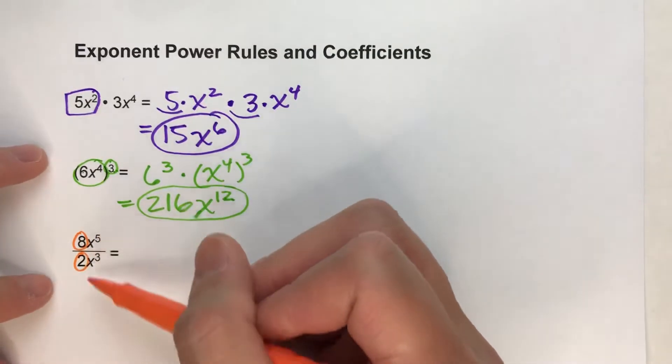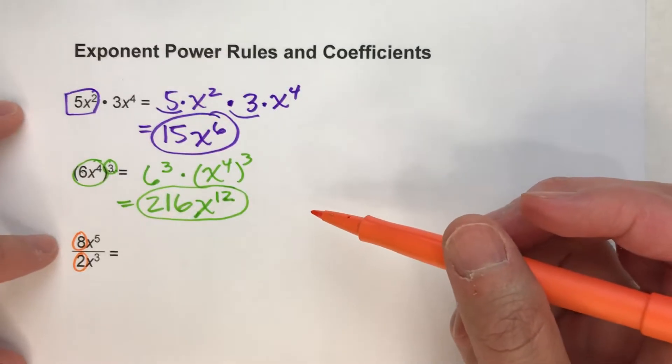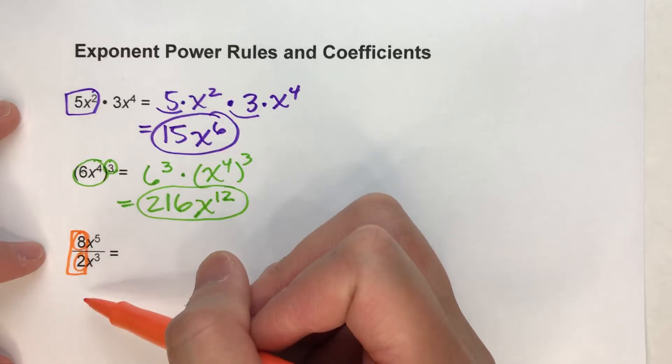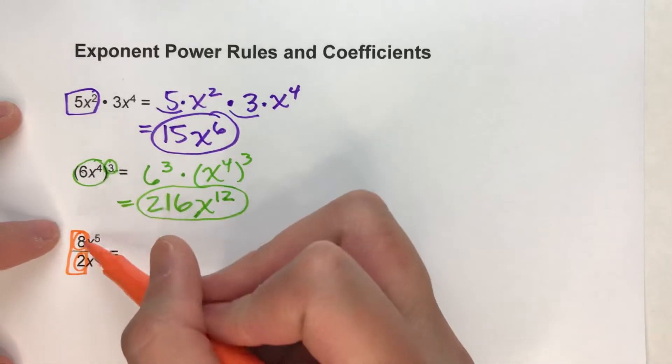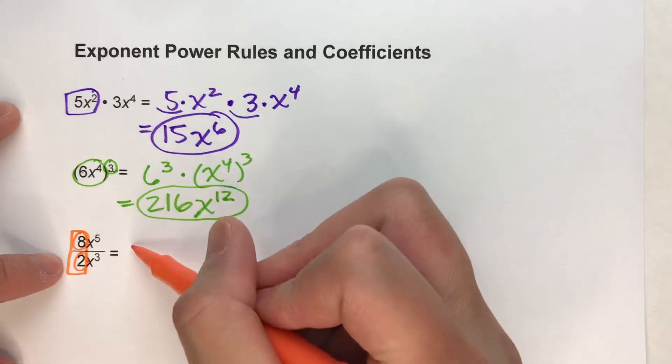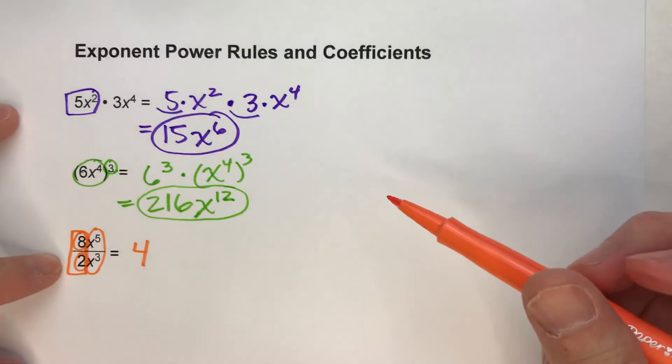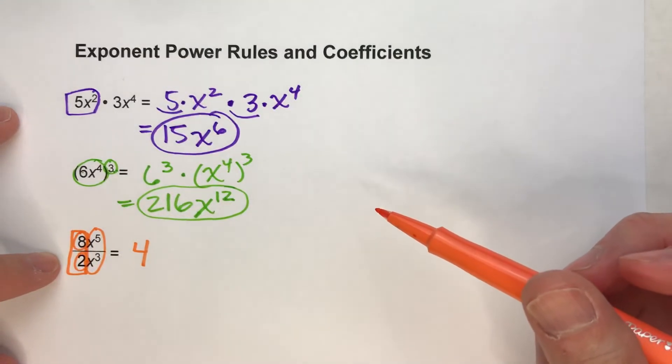Now, just like before, when we divide, we can divide the normal numbers just using normal math. 8 divided by 2 is 4, so my new coefficient's going to be 4. But when I divide the powers, I have to use the power rules.